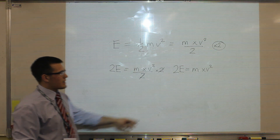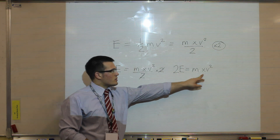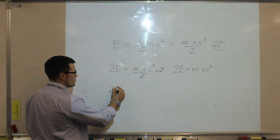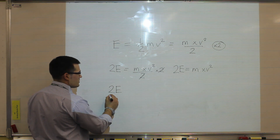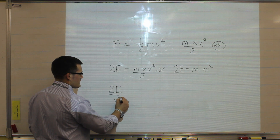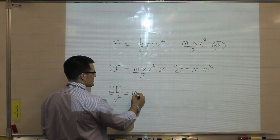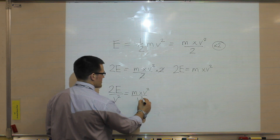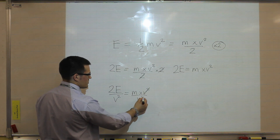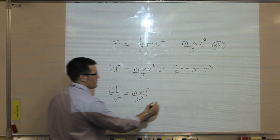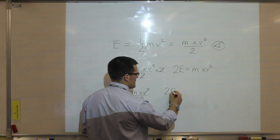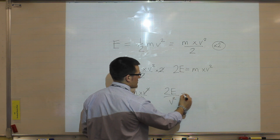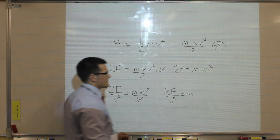Because we want to make mass the subject of our equation, we need to divide by velocity squared. So we'll have 2E divided by velocity squared is equal to mass times velocity squared divided by velocity squared — so that will cancel — and we'll be left with 2E divided by velocity squared is equal to the mass.